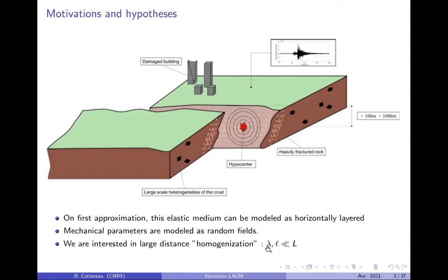What we'd like to do is tell the people who are going to design buildings what the statistics of the wave field at the surface will be, based on the statistics of the mechanical parameters. We'll model the mechanical parameters as random fields. We're interested in a particular regime — not classical homogenization, but what I'll call large-distance homogenization, where the wave propagates a long distance with respect to both the wavelength and the correlation length l.